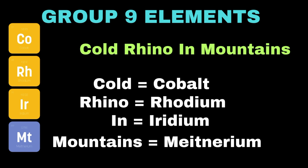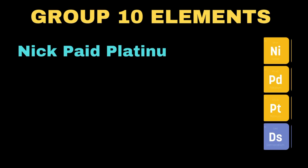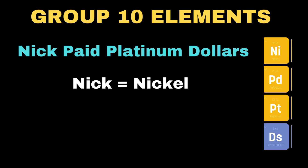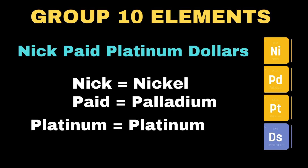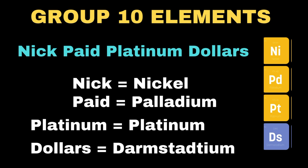Moving towards group 10 elements, the trick to remember is: 'Nick paid platinum dollars.' Here 'nick' is used for nickel, 'paid' is used for palladium, 'platinum' is used as-is for platinum, and 'dollars' denotes darmstadtium.